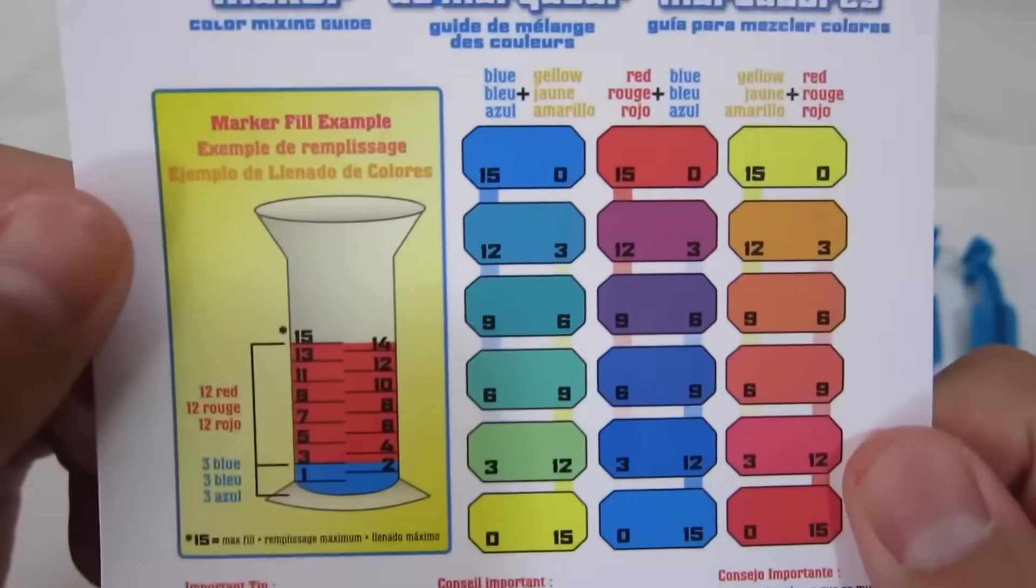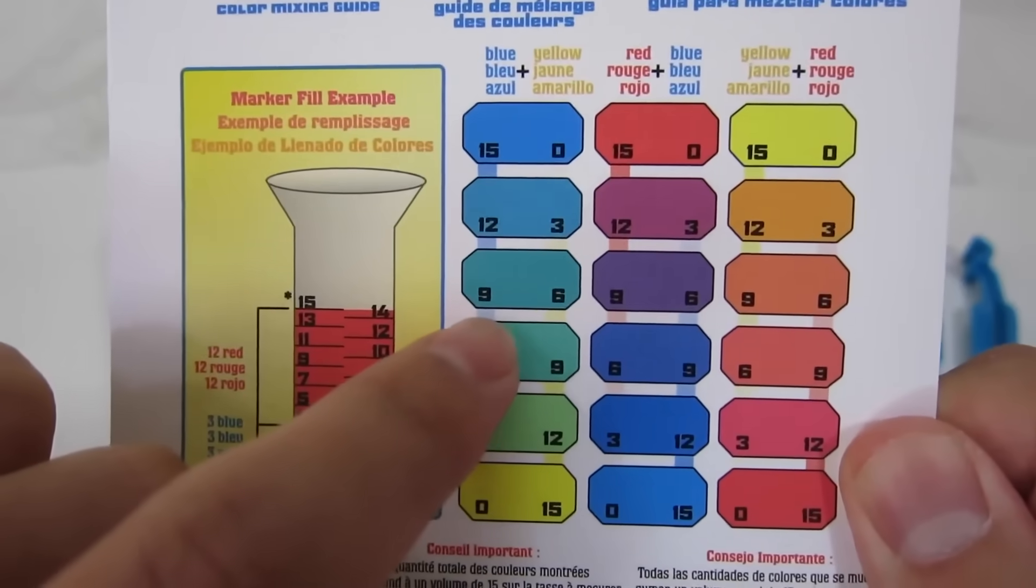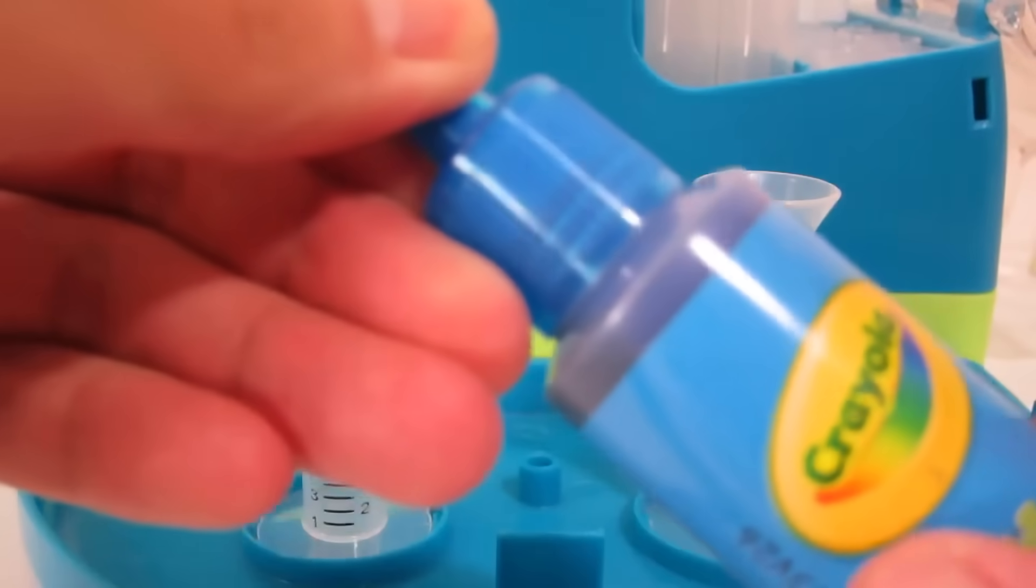What color should we make first? Let's go with teal. It says we need 9 parts blue and 6 parts yellow. So let's add the blue first.